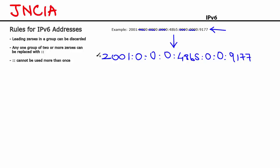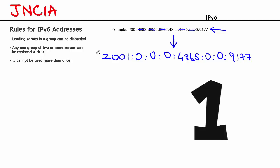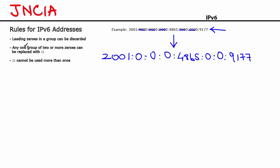The second rule says any one group of two or more zeros can be replaced with double colon. Remember the phrase: any one group of two or more zeros — this is important. In our case we have two groups of two or more zeros. Both these groups have two or more zeros. However, we are allowed to only replace one group with double colon.